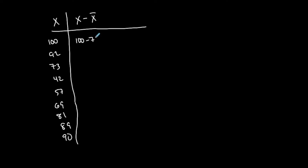So now I have to take each of these minus x bar, which was 77. So 100 minus 77, 92 minus 77, 73 minus 77, 42 minus 77, 57 minus 77, all the way down to the bottom. That is what this portion of the formula is telling you to do. And that's what it's about, understanding what the formula is telling you. Once you understand that, you can do any situation.